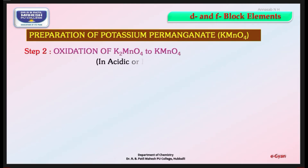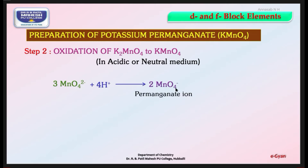In the next step, we oxidize K2MnO4 into KMnO4 in acidic or neutral medium. The ionic equation is: 3MnO4²⁻ + 4H⁺ → 2MnO4⁻ (permanganate ion) + MnO2 + 2H2O. So first we take MnO2, treat with KOH and oxygen to get K2MnO4, which on acidification gives KMnO4.